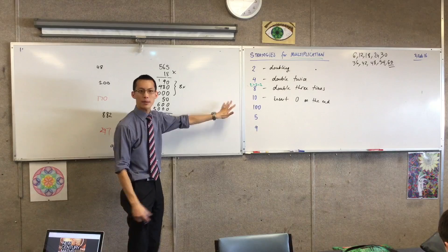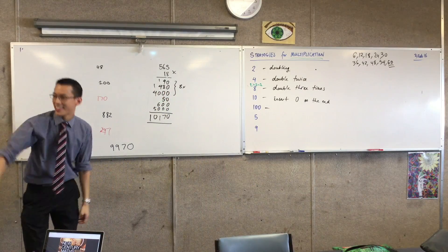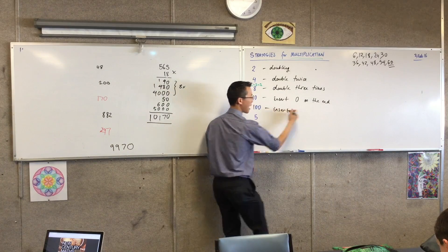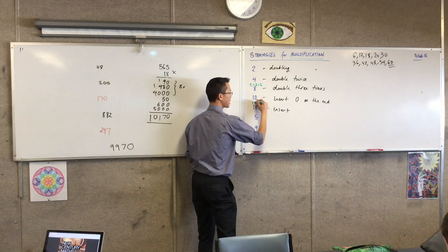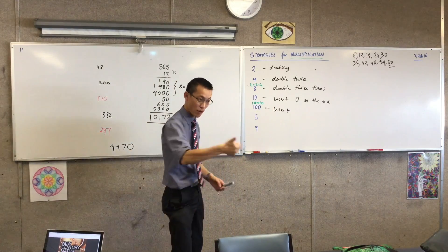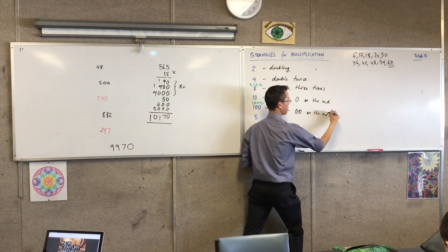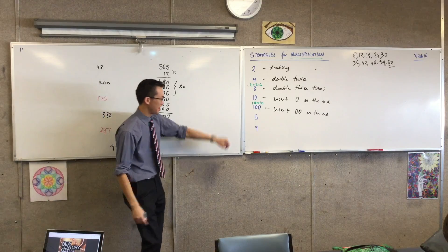Okay, now 100's in the same family. What do you think I could do if I want to multiply by 100? Yeah, go ahead. Very good. Because multiplying by 100 is just like we saw before. It's multiplying by 10 twice. Notice that, right? Multiply by 10 once, then do it again. So I can insert 0, 0 on the end.